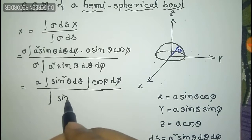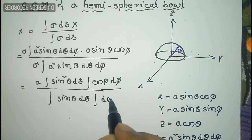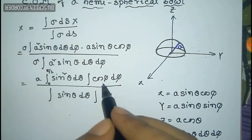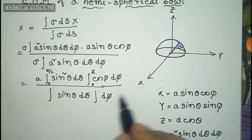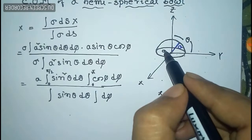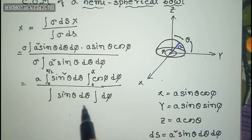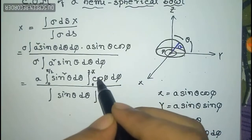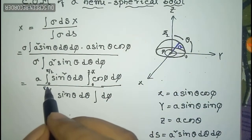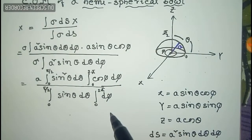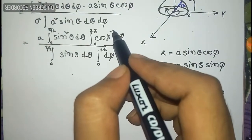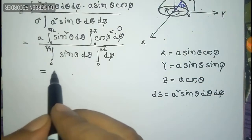This simplifies to a sin²θ dθ times cos φ dφ in the numerator, and sin θ dθ dφ in the denominator. The integration limits are θ from 0 to π/2 and φ from 0 to 2π. The integration of cos φ from 0 to 2π is 0, so the total value of x̄ is 0.